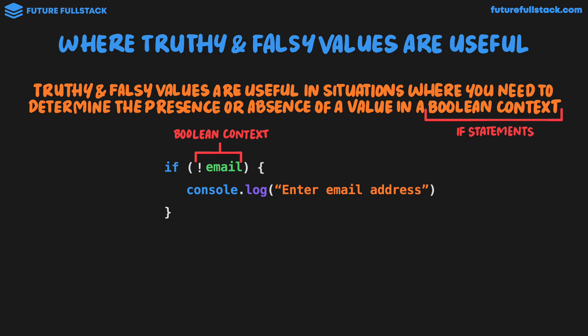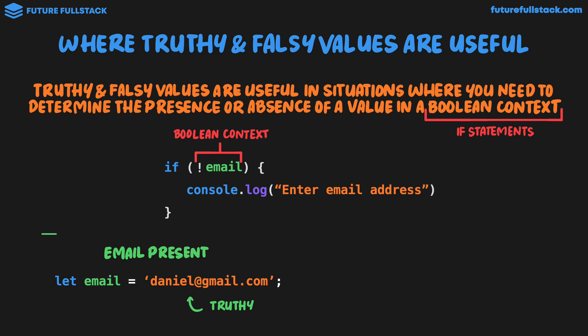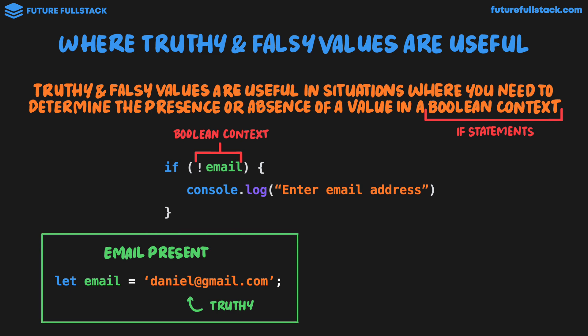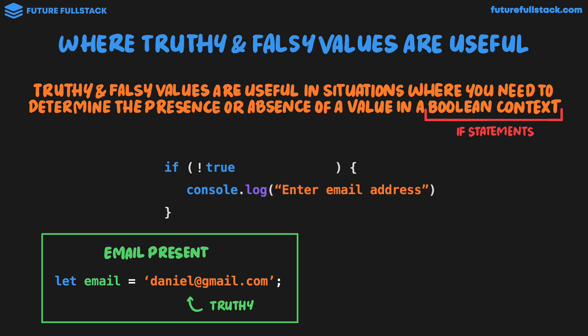Inside our parentheses of the if statement we have a boolean context. The reason truthy and falsy values are very helpful here is because we're just checking if there is a value for email. If there is a value, we won't execute the console.log. But if email doesn't have a value, the console.log will run. When the email is present, we'd have something like let email equal "daniel@gmail.com," which is a string — a truthy value. So inside this boolean context, that string is converted to true, not true is equal to false, and the code block won't run.